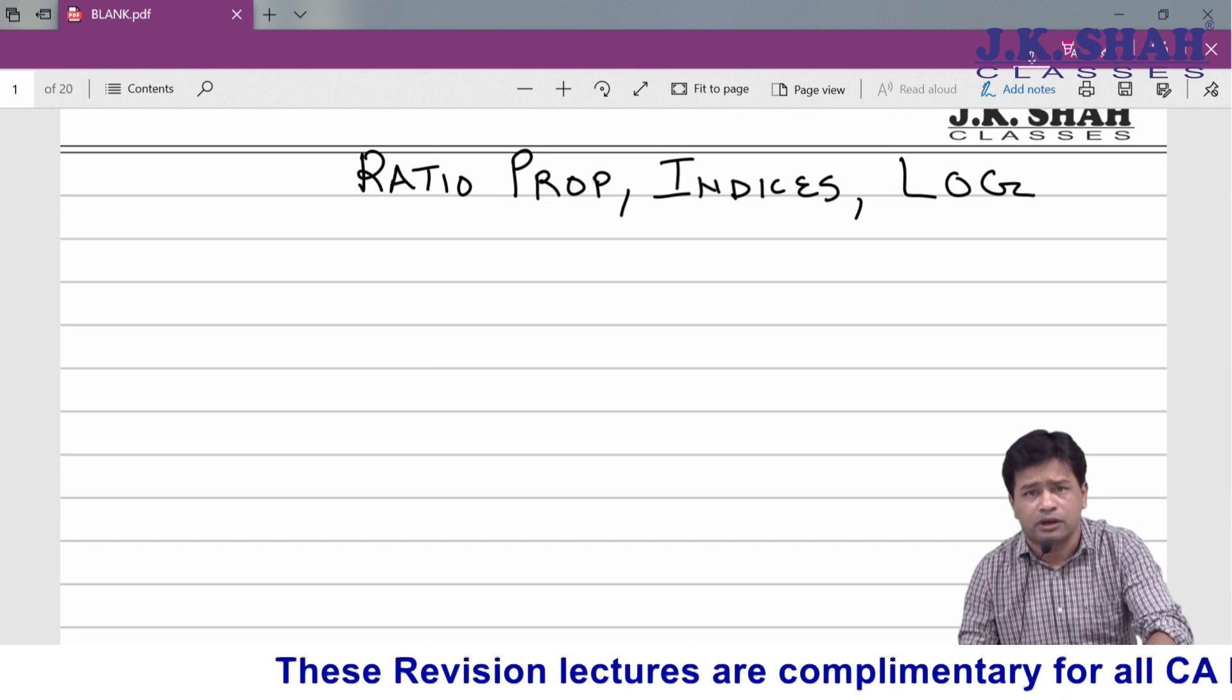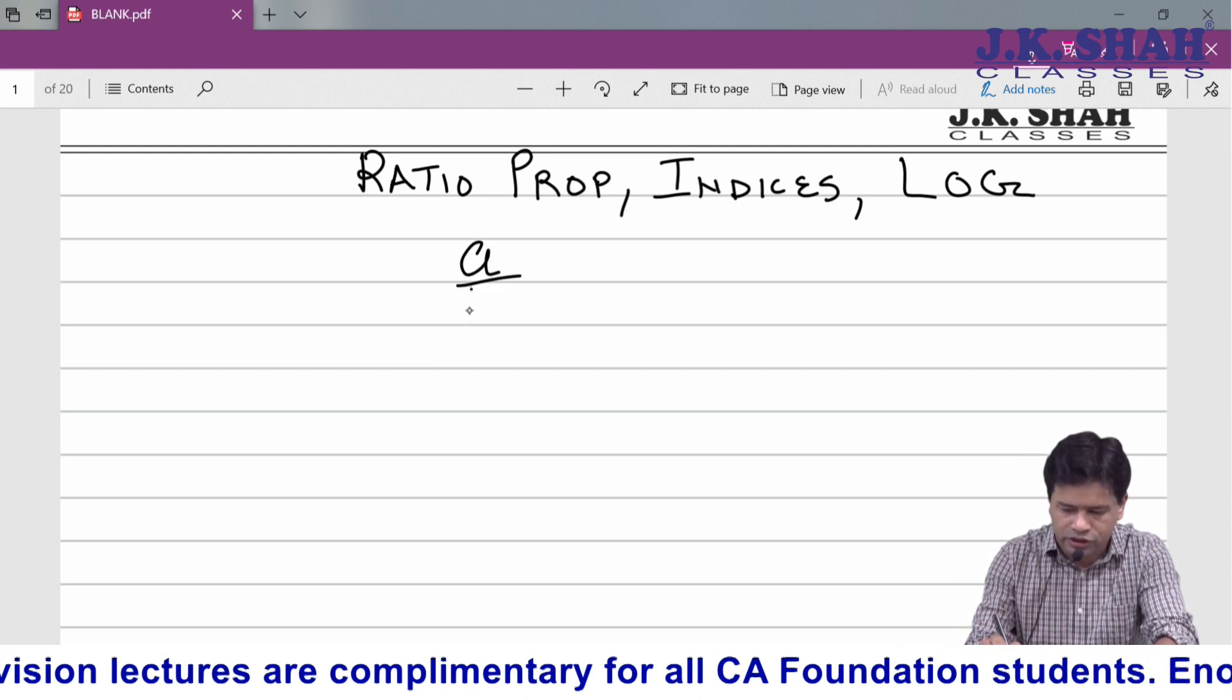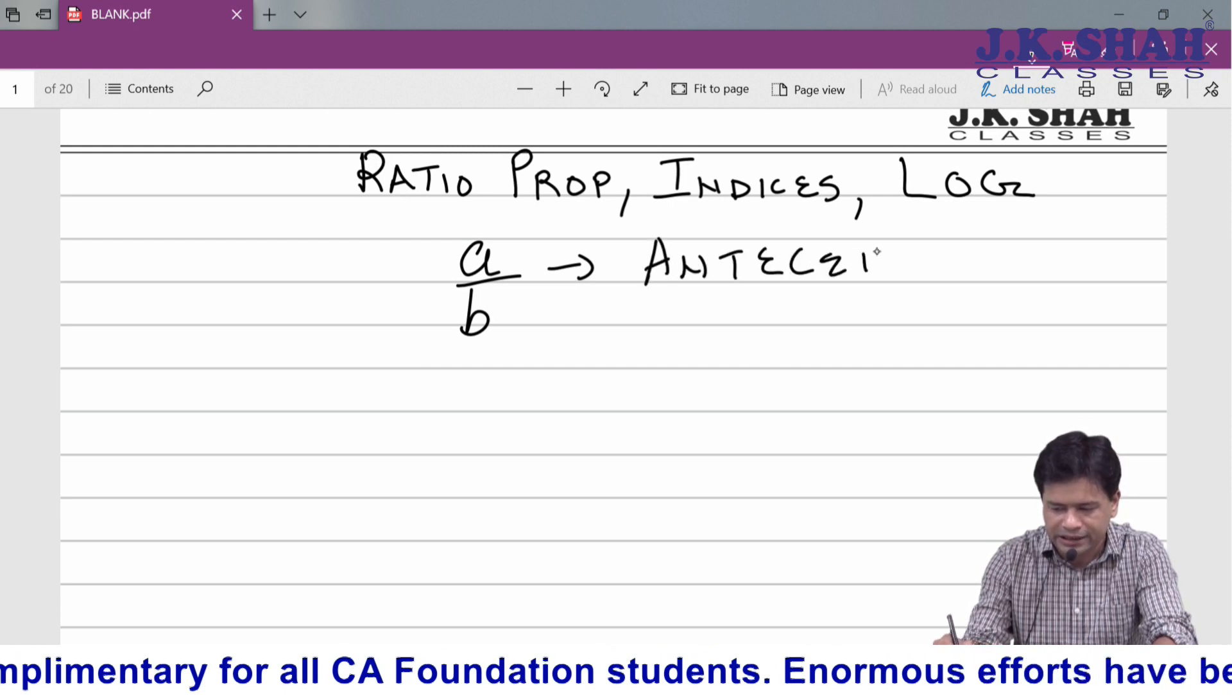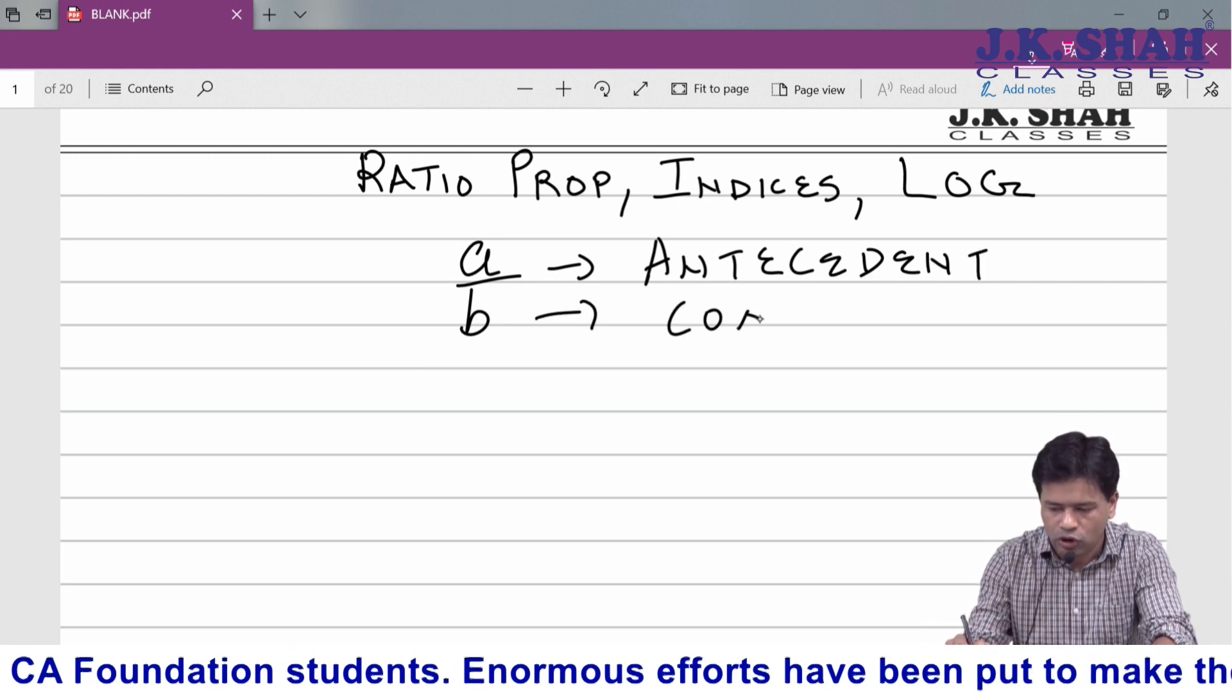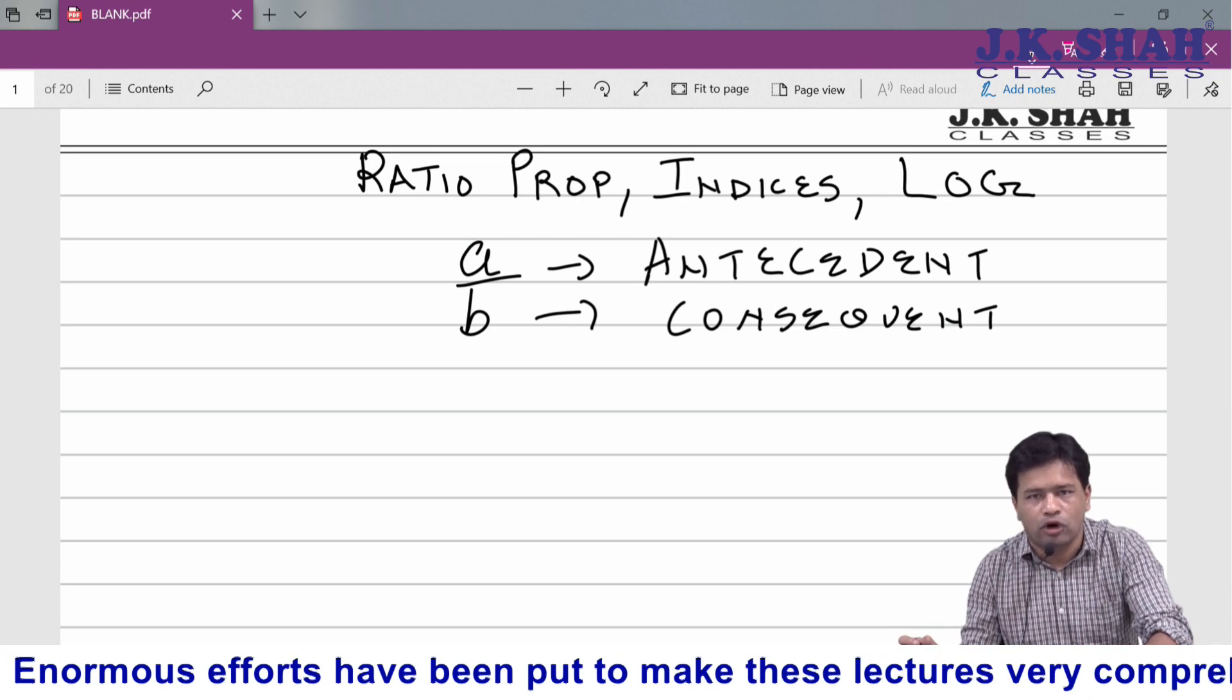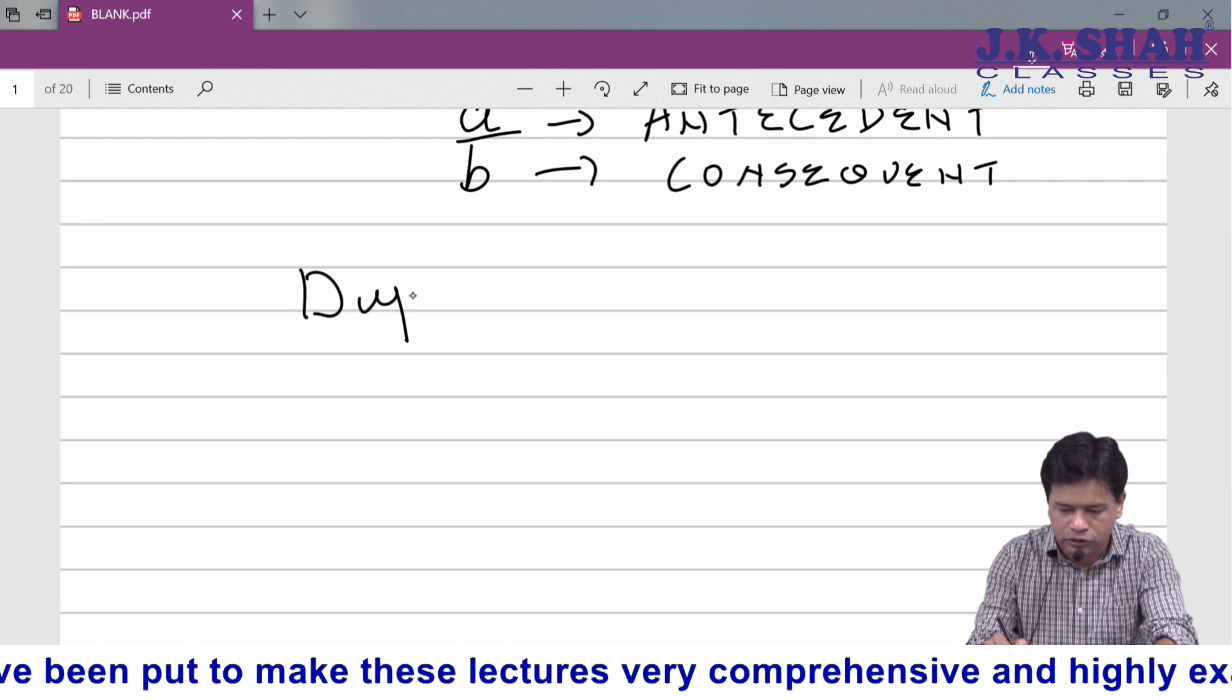First, let us discuss the points of ratio and proportion. For a given ratio a upon b, a is called the antecedent and b is called the consequent. The numerator is called antecedent, the denominator is called consequent. Then there are some terminologies: duplicate ratio, triplicate ratio, and so on.